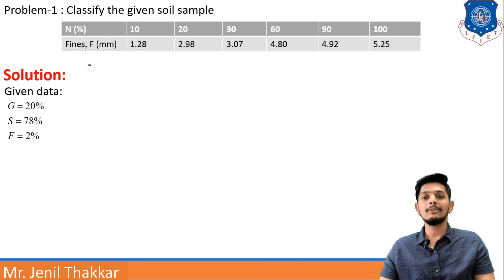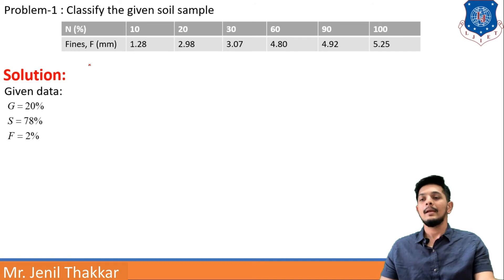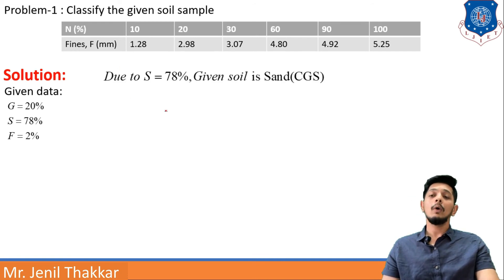Sand are 78 percent. So we can understand this soil will be sandy soil because of the sizes or percentage that is 78% of the soil is sandy soil. So it will be a sandy soil. Now we will do what: given soil is sandy soil and it is a CGS coarse-grained soil.